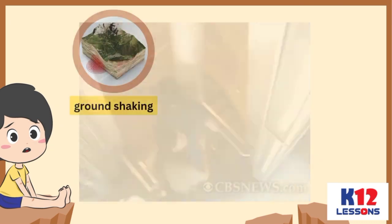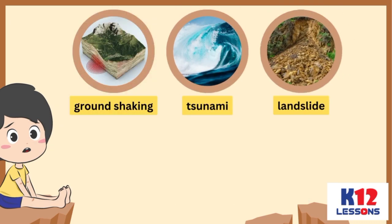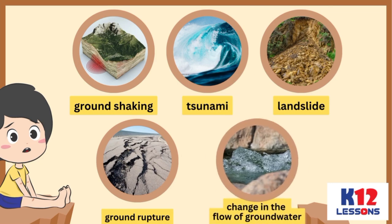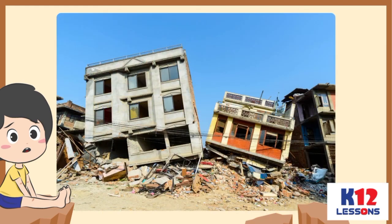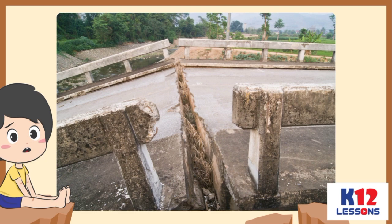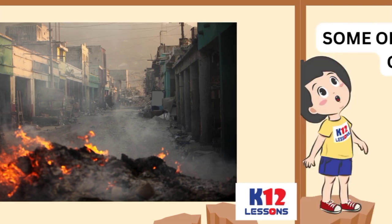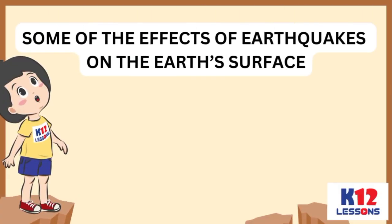An earthquake has many effects on the Earth's surface. Surface effects include ground shaking, tsunami, landslide, ground rupture, and change in the flow of groundwater. It can bring significant damage to buildings, bridges, roads, and other infrastructures. It can also indirectly cause fire on people's homes.